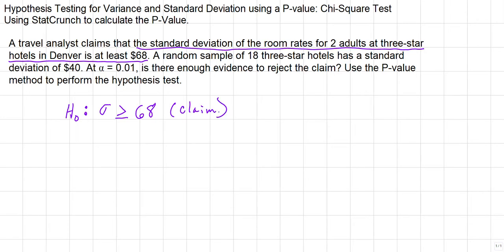Our alternative hypothesis is a statement of inequality, and it will be based directly upon the statement of equality from the null. And it will be simply that sigma is less than 68.